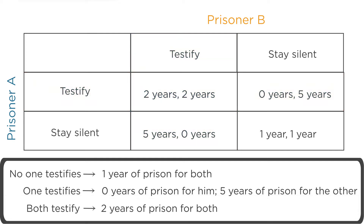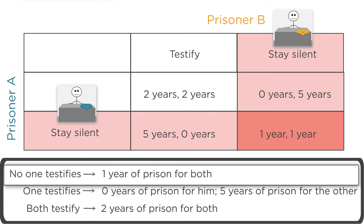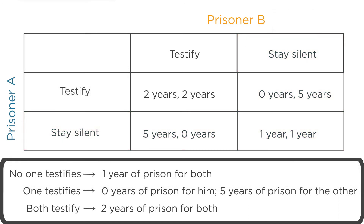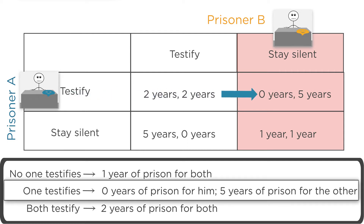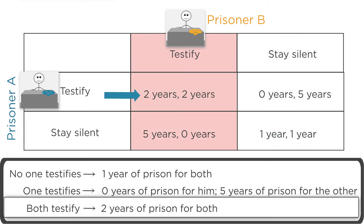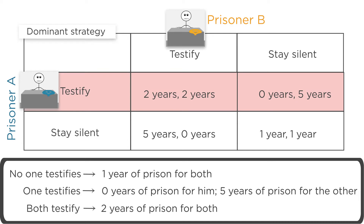So what's the best strategy for each player in this high-stakes game? That depends on whether the players are cooperative or non-cooperative. If they're cooperative, both prisoners should stay quiet and each take the year in prison. But what's more realistic — given that they can't talk to each other — is the non-cooperative situation. Imagine that you're prisoner A. If prisoner B stays silent, you're better off testifying, since that means you go free instead of spending a year in prison. And if prisoner B betrays you and testifies, you're still better off testifying, since that means you get only two years instead of five. For prisoner A, testifying is a dominant strategy — the best strategy no matter what the other player does.